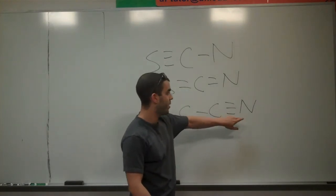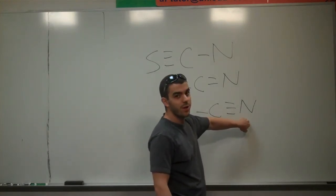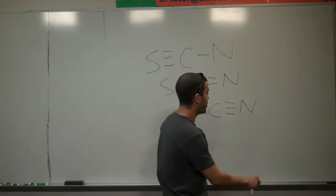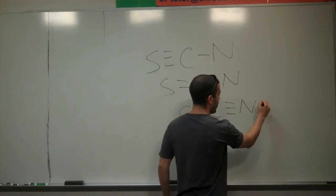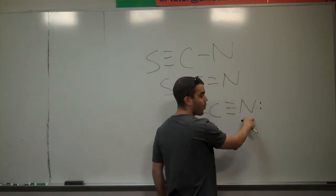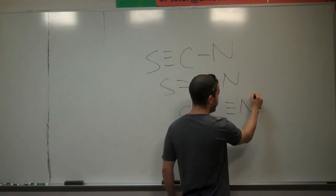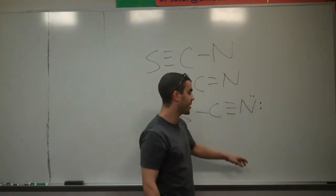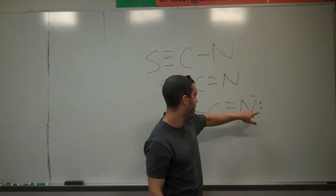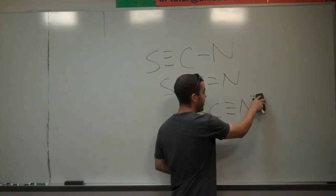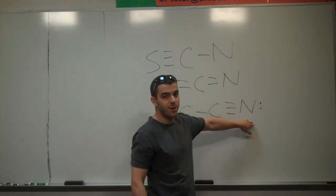In this system here, in order for nitrogen to hold the negative charge, it would have to have more than one lone pair, it would have to have two lone pairs in some way. But in this case, we have more than eight electrons. You guys remember that in this system here,